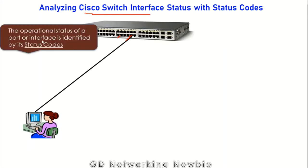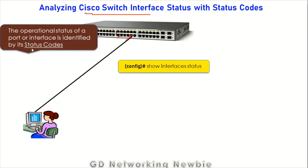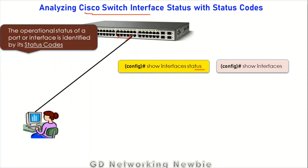The operational status of a port or interface is identified by its status codes. These status codes help us identify problems. We can access those status codes using two show commands: 'show interfaces status' and 'show interfaces'. These two commands allow us to find status codes that can guide us if there is a problem with a port or interface of a switch.